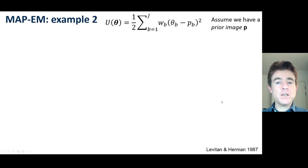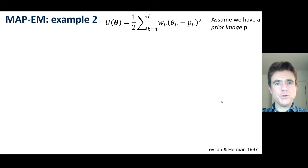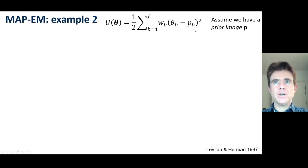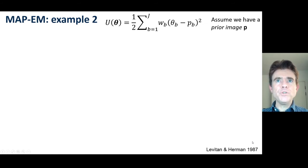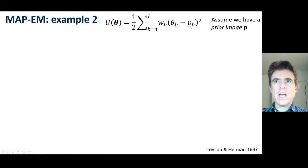This next method is far more robust but a bit more limited — though ironically it's now being used a lot in deep learning-based reconstruction. This was a simple method proposed in 1987 by Leahy and Herman, where the energy function says the MAP estimate theta should not be too far from some prior image that you have. Where you get that prior image from is the key question, to be dealt with in other videos.